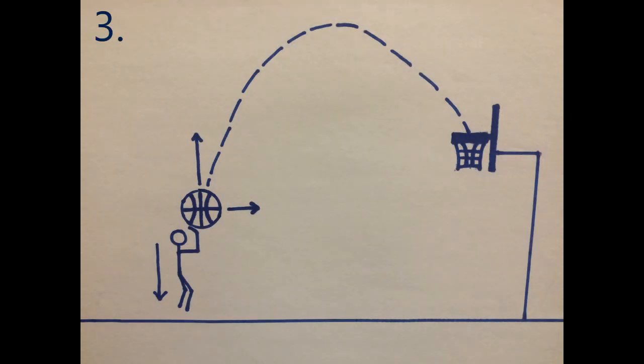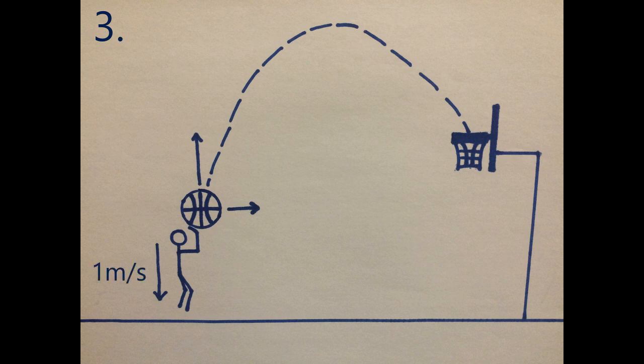This is scenario 3. Here, I've already jumped up and now I'm falling vertically back to the ground. Let's say I'm falling at 1 meter per second. Because the ball and I are moving downwards, my arm now has to produce more vertical force than before. I still have to produce 10 newtons horizontally, but now I have to produce 15 newtons vertically for the ball to exit my hands at 2 meters per second.